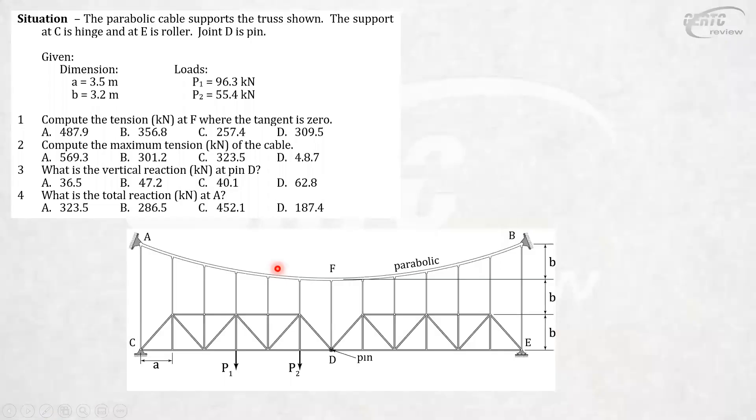Here is the problem. The parabolic cable supports the truss shown. The support at C is hinged and at E is roller. D is a pin, a joint that's pin connected. So two trusses supported by a roller and a hinge and the parabolic cable. It was specified this is a parabolic cable, so meaning the hangers here are equally loaded to keep this in parabolic shape. The loads here are all equal. Dimensions are given: A is 3.5 meters, B is 3.2 meters, P1 is 96.3 kilonewtons and P2 is 55.4 kilonewtons.